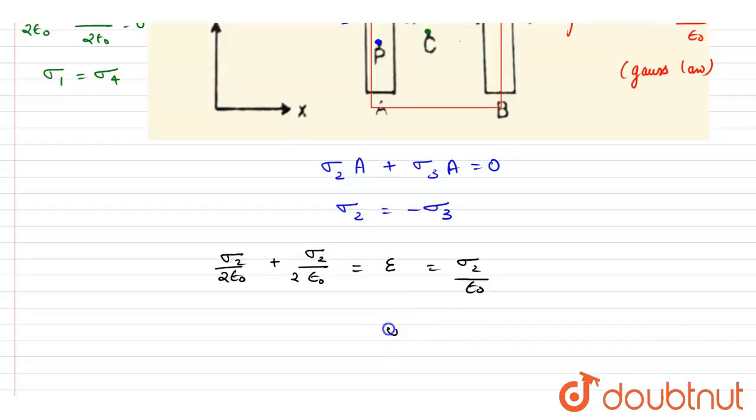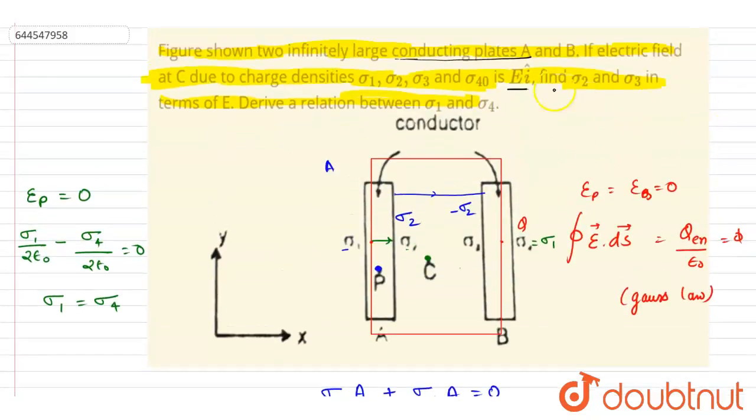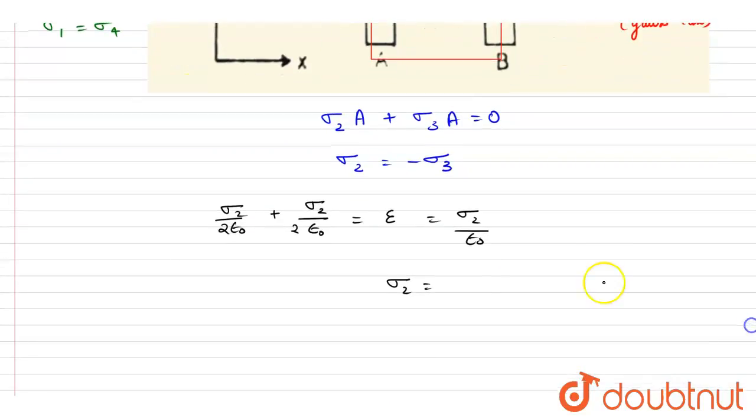î is this direction, which means this one is positive and this one is negative. It will emerge from positive and terminate at negative. From here you got the σ₂ magnitude, and σ₃ will be -σ₂.